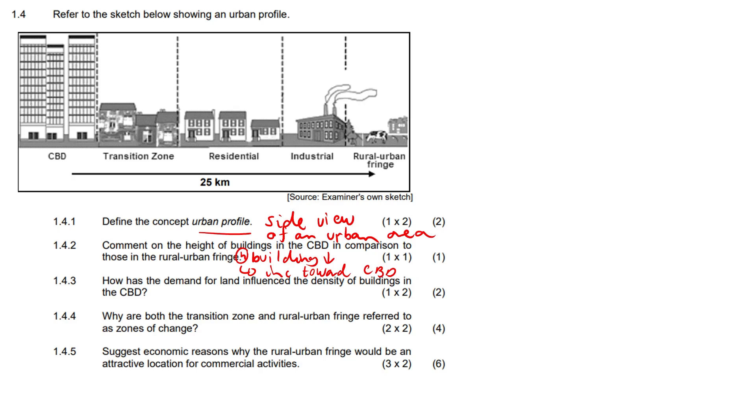1.4.3. How has the demand for land influenced the density of buildings in the CBD? Well, it has simply resulted in a very high building density. My nephew, he's very much Gen Z, he would say there's gang buildings here. Please, if you write that in your exam, Goon will have a heart attack. Just say there's high building density. There's just going to be a lot more buildings, a lot more people coming in, a lot more job opportunities. Where there's money, people want to come through because everyone wants to be richy rich.